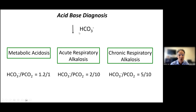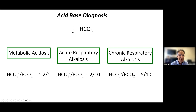You can use the calculated bicarbonate or the total CO2. Ask yourself: is the number normal, increased, or decreased? If it's decreased, you have a choice of three acid-base disorders. You distinguish these not by what the bicarbonate is — because it can be low in all of them.